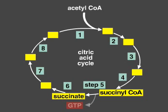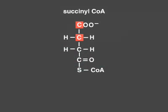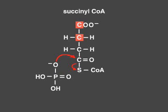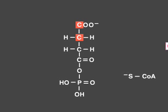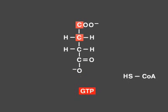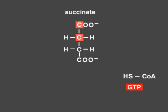The next reaction releases enough energy to form GTP, an energy-carrying molecule related to ATP. In this reaction, succinyl-CoA is converted into succinate. The release of the coenzyme A group provides the energy to combine GDP and inorganic phosphate into GTP. Note that succinate is a symmetrical molecule — the two end carbons are chemically identical, and the two carbons in the middle are chemically identical. For convenience, we will continue tracing only the two carbons depicted in the upper half of the molecule.